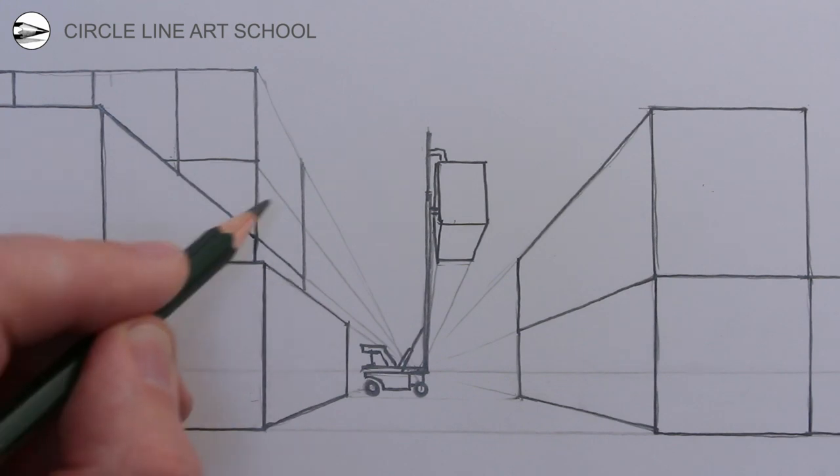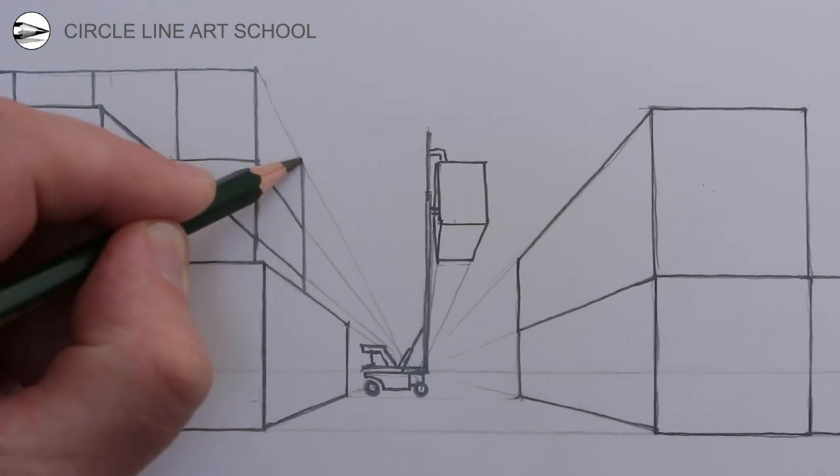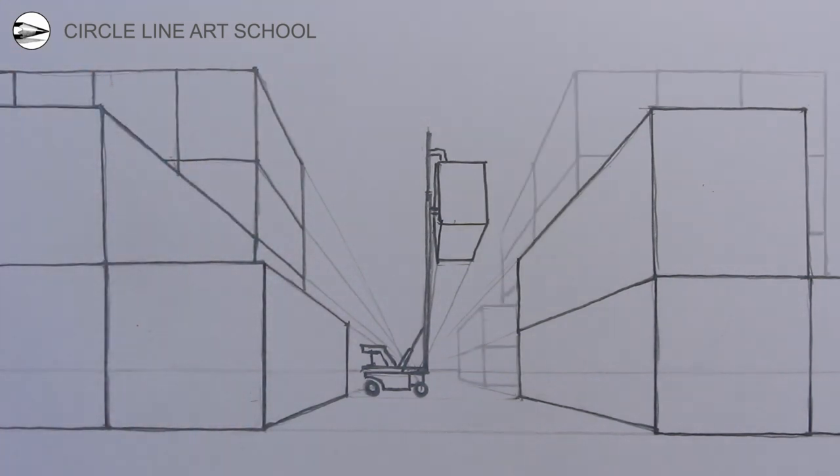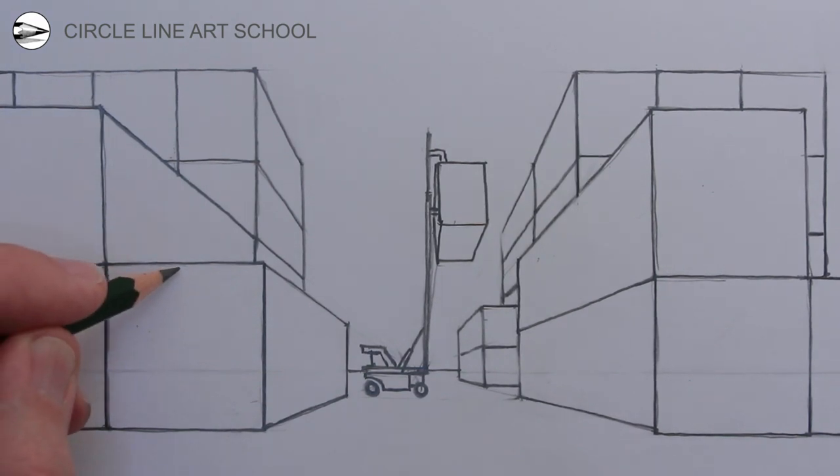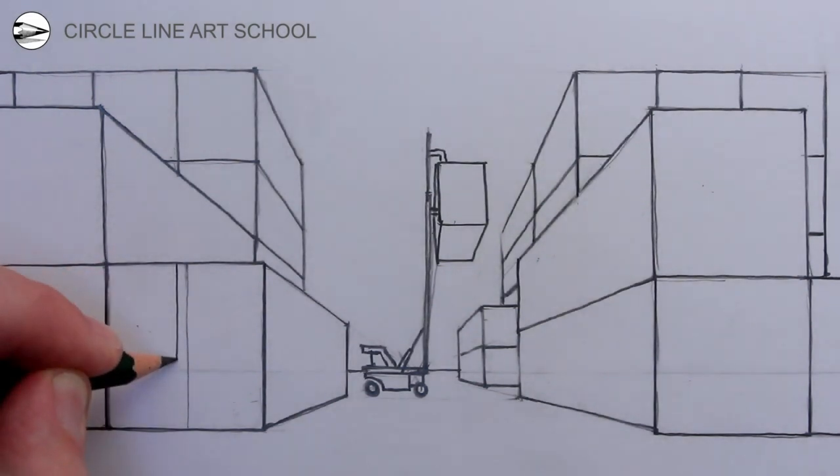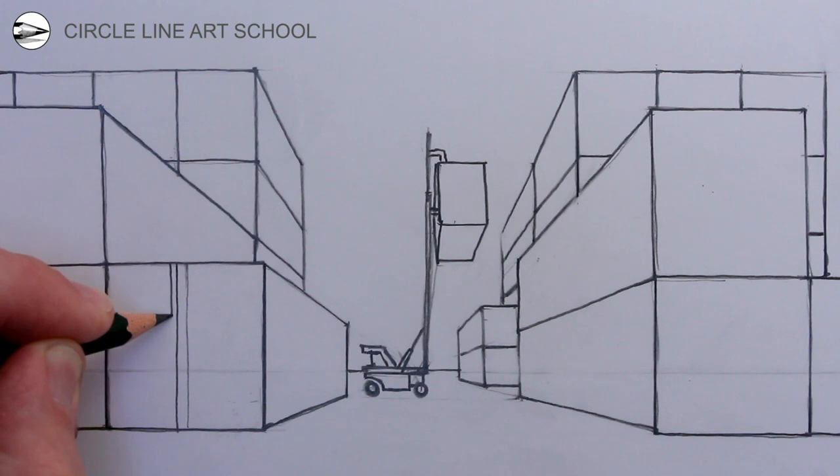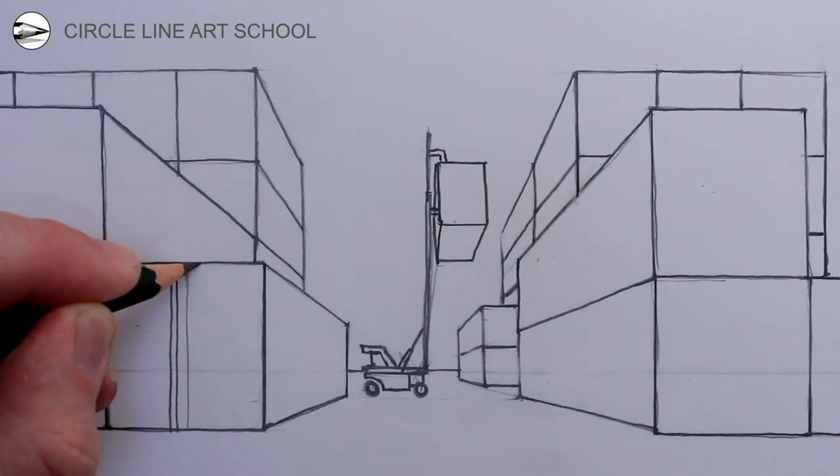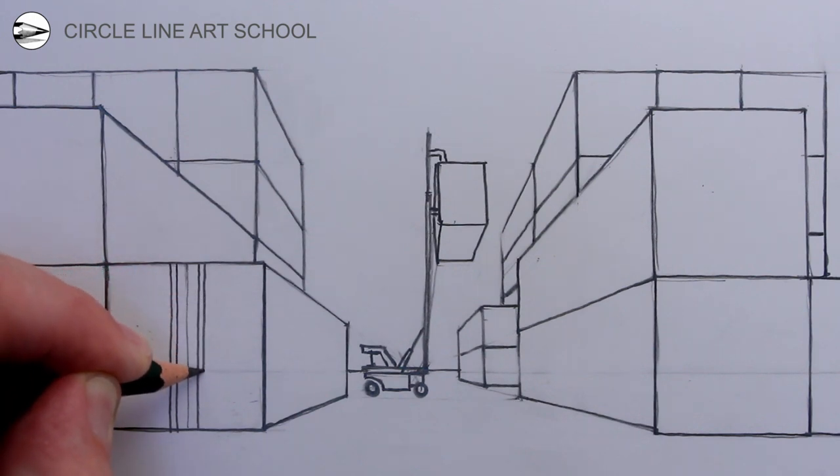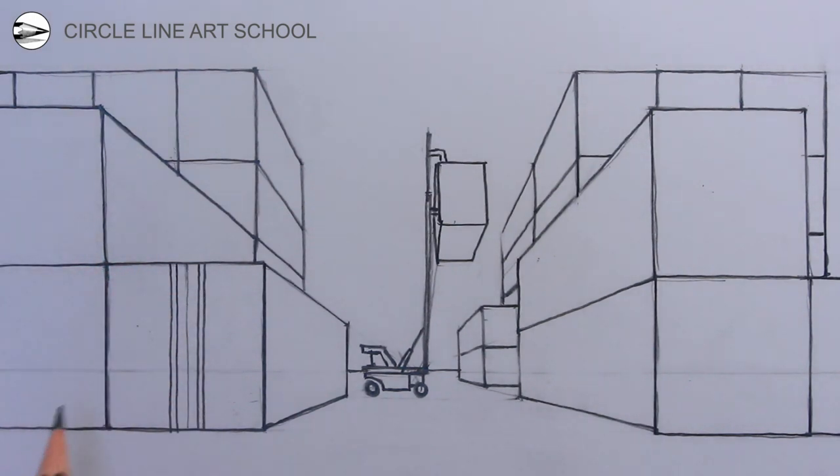Next erase some more guidelines that you no longer need. When you are ready you could draw the details for the front of each of these shipping containers. Start by drawing a central vertical line to create two doors for each of the shipping containers. Either side of this vertical central line, draw two more vertical lines close to, and these can be the locking bars on each side.